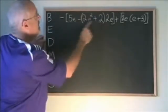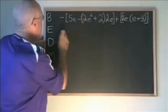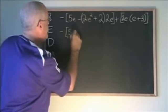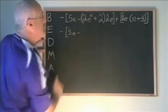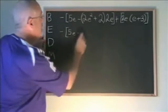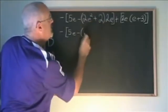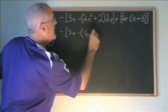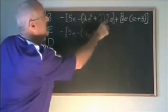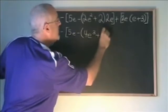The multiplication has to be done before this subtraction. So I write the answer to the multiplication inside the bracket, and I get 2e squared times 2e, which is 4e cubed, and 2 times 2e, which is 4e.